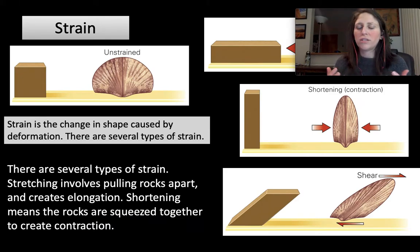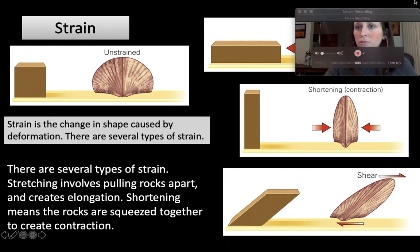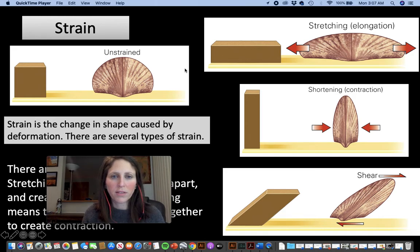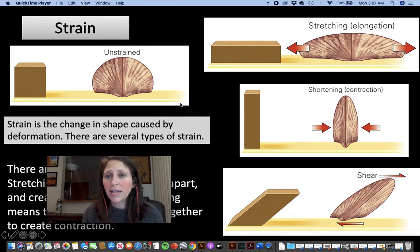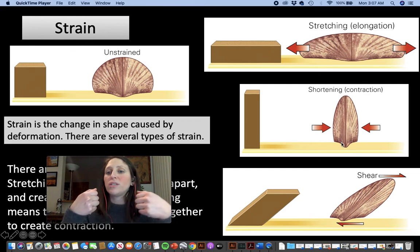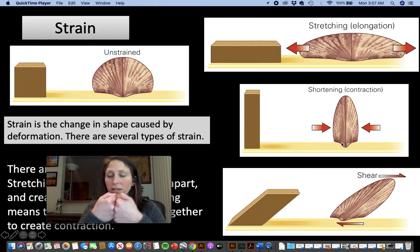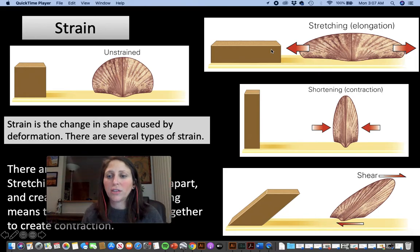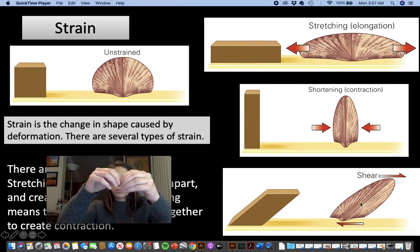These types of stress will give us a specific type of strain. In this slide we have a little undeformed brachiopod, our little fossil friend, and this is what it looks like when undeformed. When it's deformed and experiencing compression, you're going to get contraction — you compress and contract, thickening that brachiopod in the center. In the top example, the brachiopod is being stretched and elongated, pulled apart. And then in our last picture we have the brachiopod being sheared.